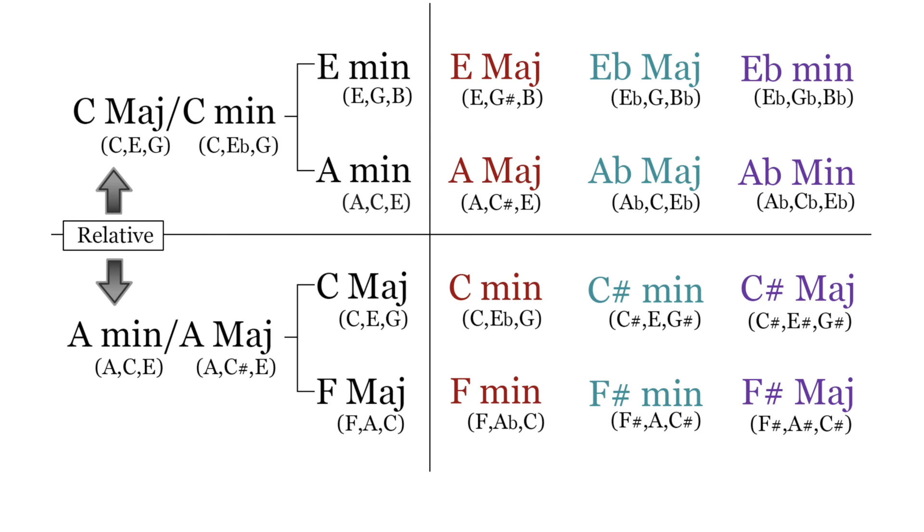You can also use these chromatic median relationships, not just between chords, but between two different key centers. For example, you could write an entire A section in the key of C major, and then in the B section, you could modulate to something like E flat major. I'm not going to play every combination, but here are a couple of examples so you can start to become familiar with some of the atmospheres that these chords provide.